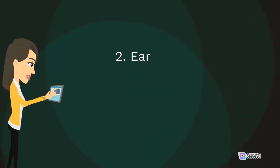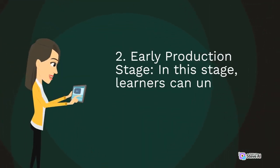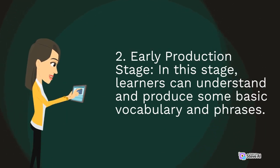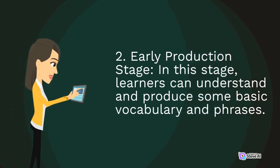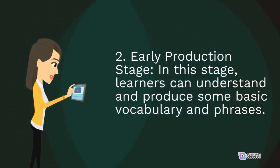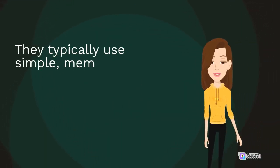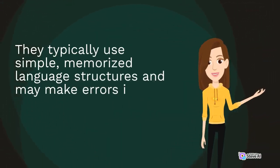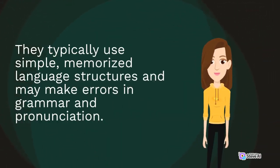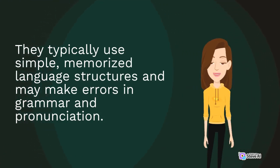2. Early production stage. In this stage, learners can understand and produce some basic vocabulary and phrases. They typically use simple, memorized language structures and may make errors in grammar and pronunciation.